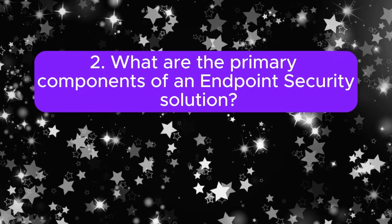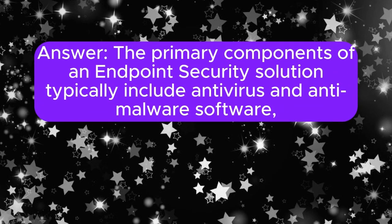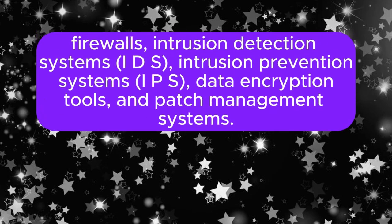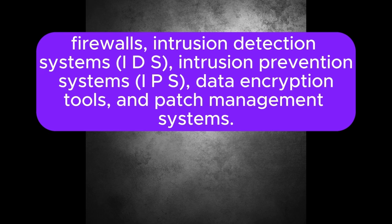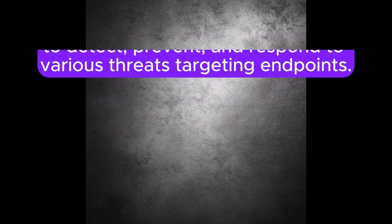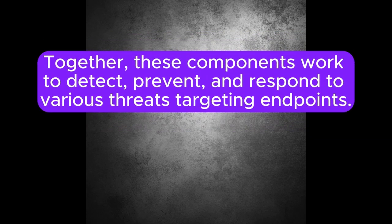Question 2: What are the primary components of an endpoint security solution? The primary components typically include anti-virus and anti-malware software, firewalls, intrusion detection systems (IDS), intrusion prevention systems (IPS), data encryption tools, and patch management systems. Together, these components work to detect, prevent, and respond to various threats targeting endpoints.